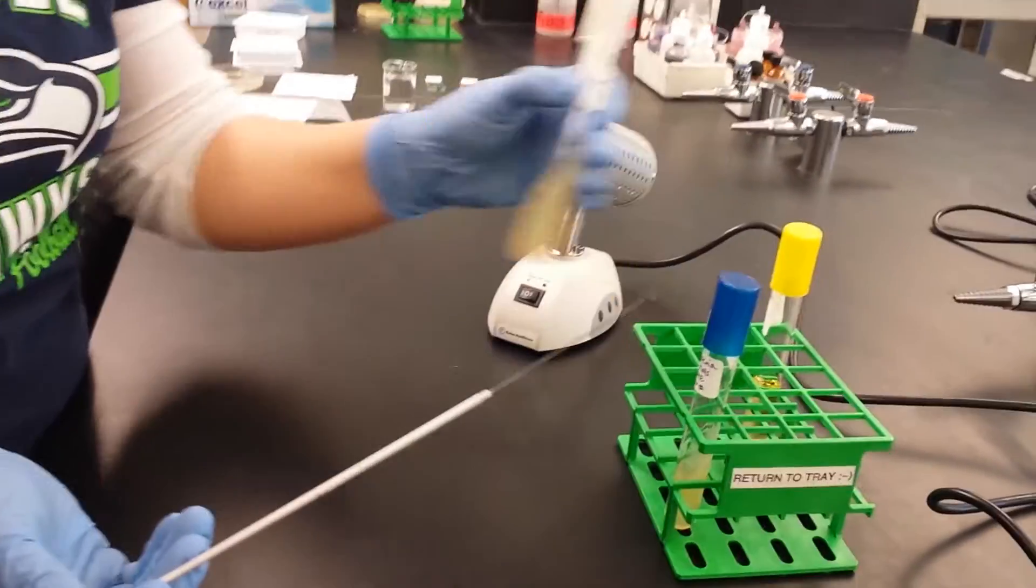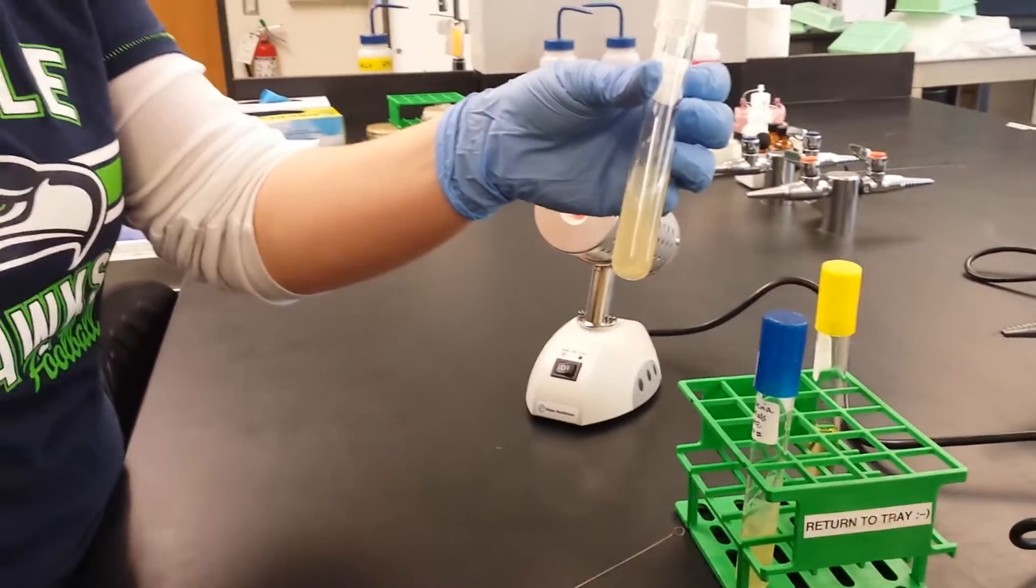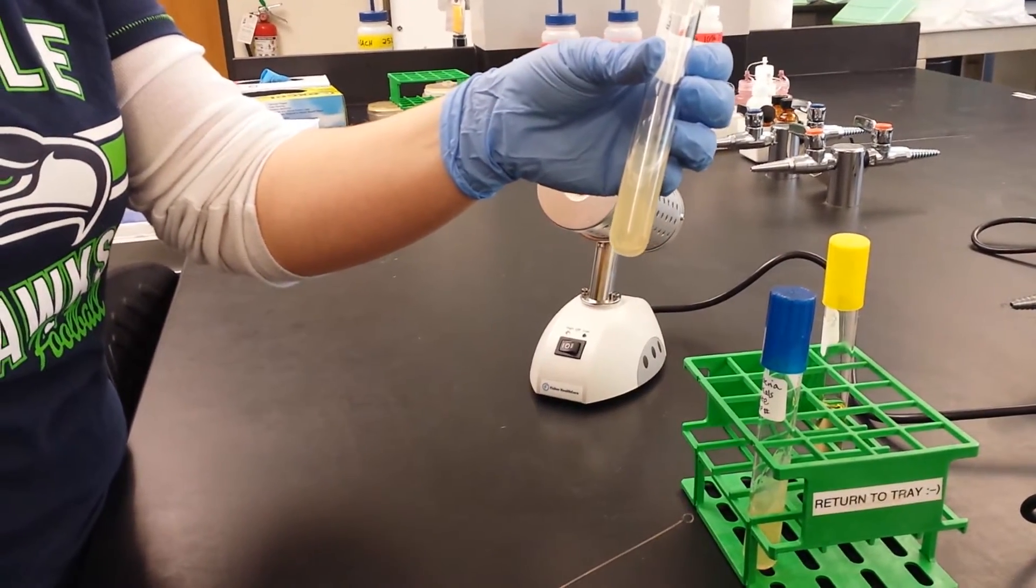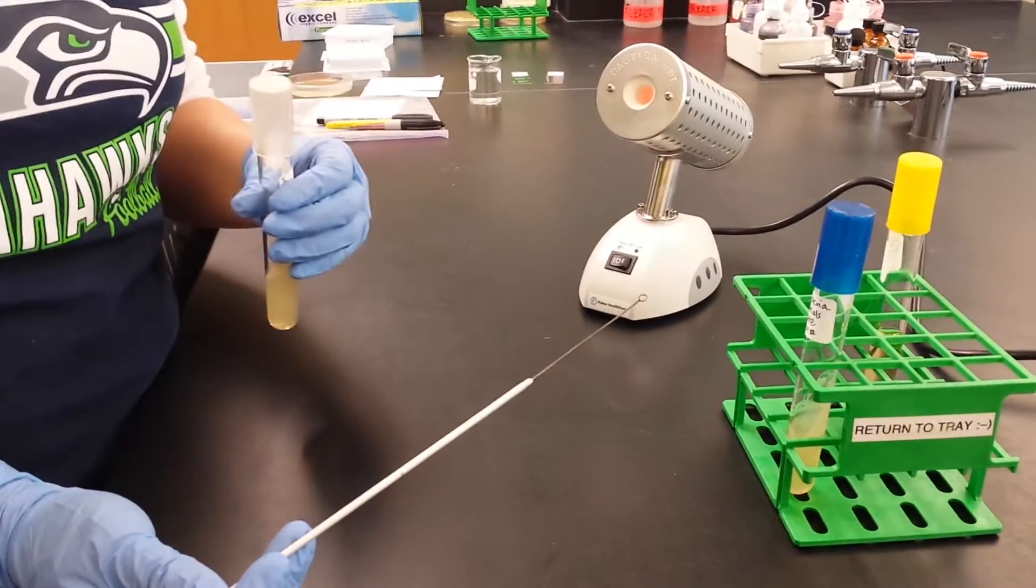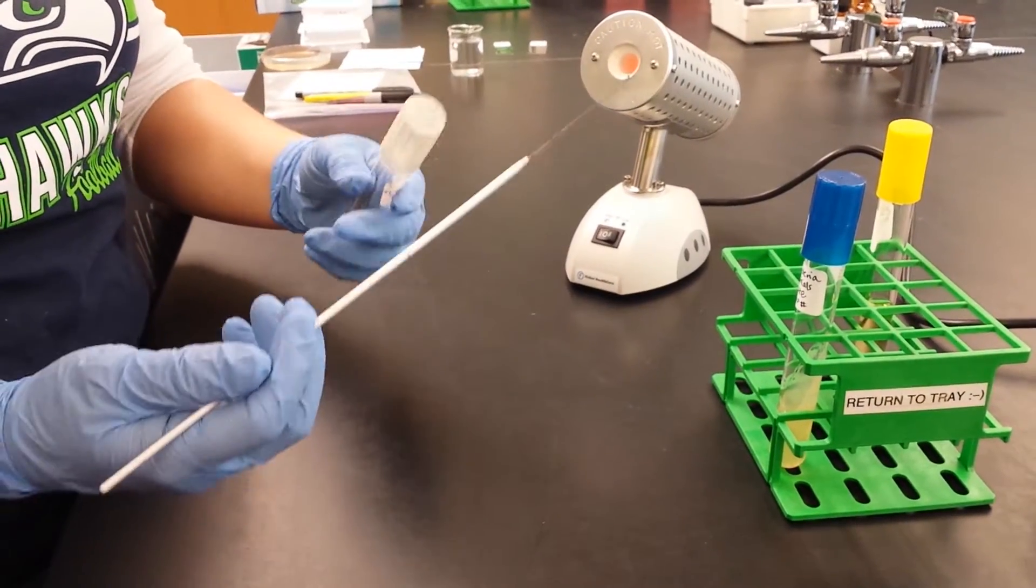Then I'm going to pick up my culture tube. So there's growth on this slant, and I'm going to touch down to that slant. You need to make sure you cool your loop for about 20 seconds before you put it in to the test tube.